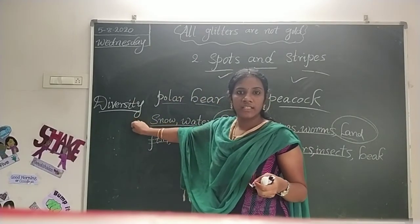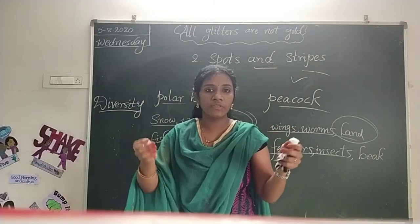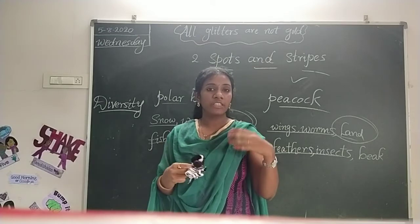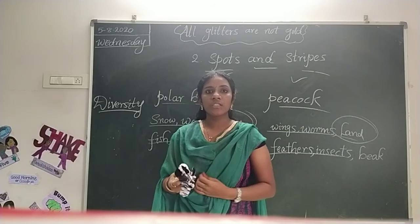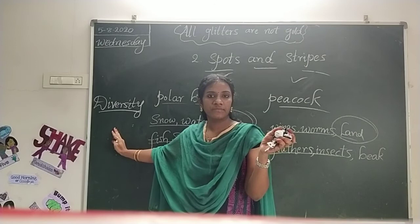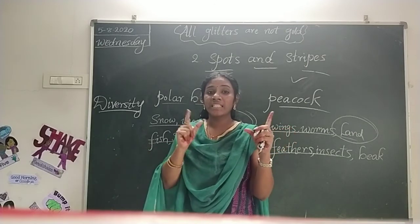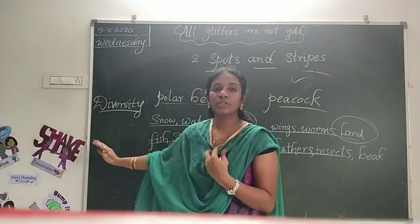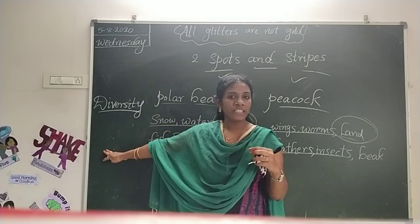So now you know diversity. We observe different types of differences in animals — like the way of looking, the way of eating, and the way of moving. Such a wide range of differences we can call diversity. Up to now, you know spots and stripes, the differences between animals, and the definition of diversity.